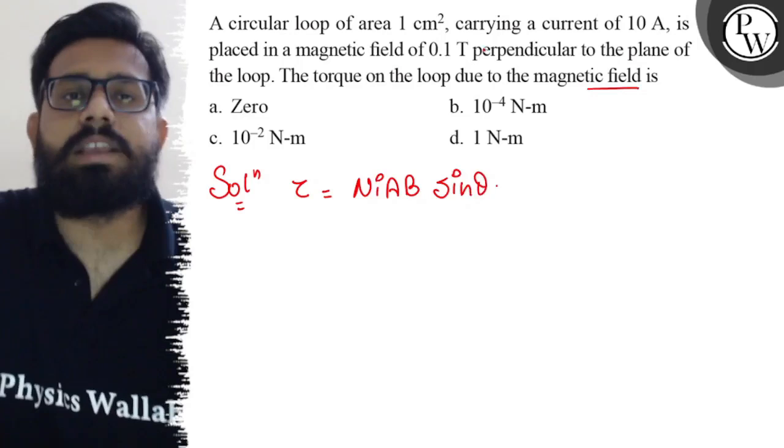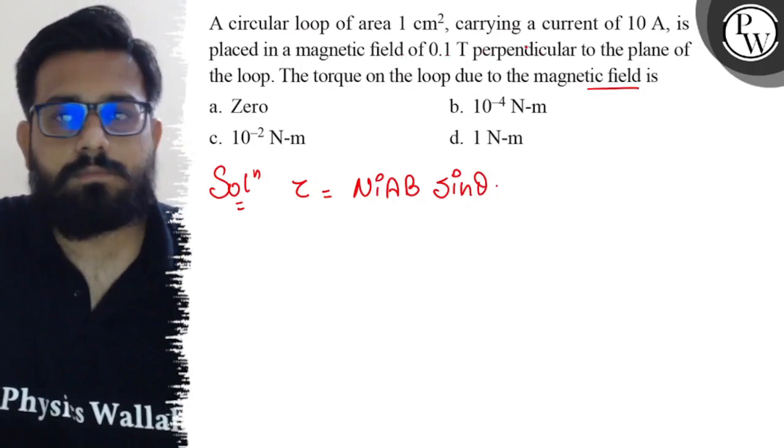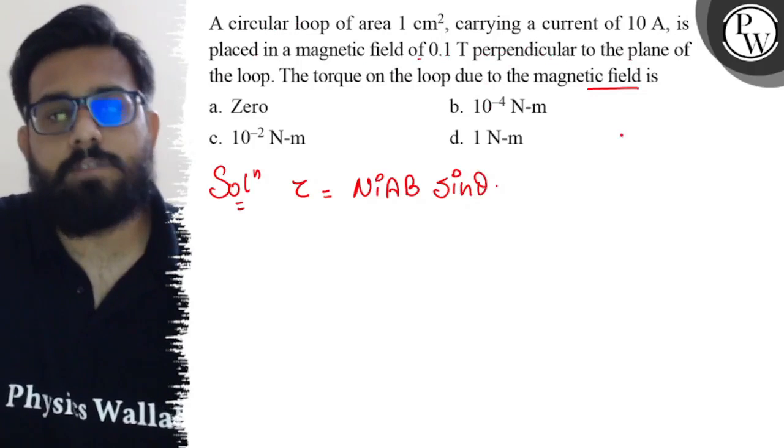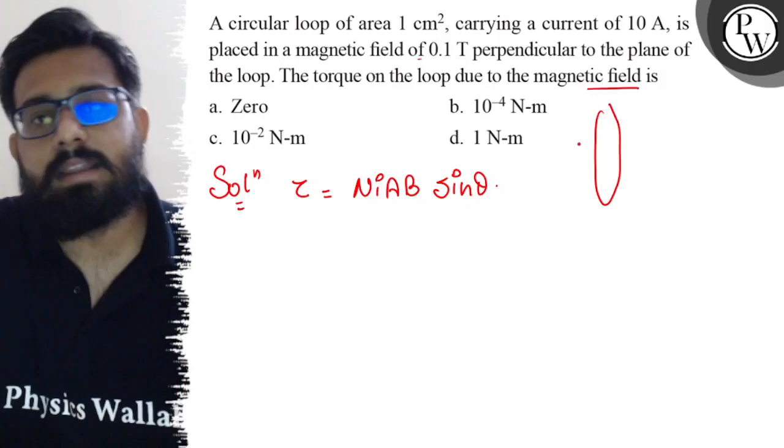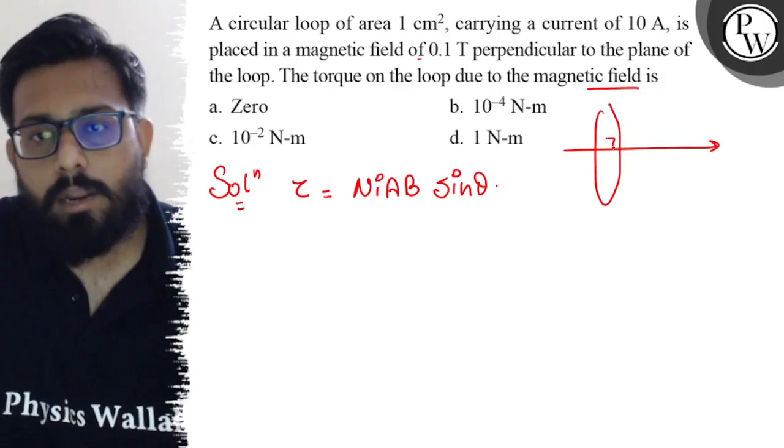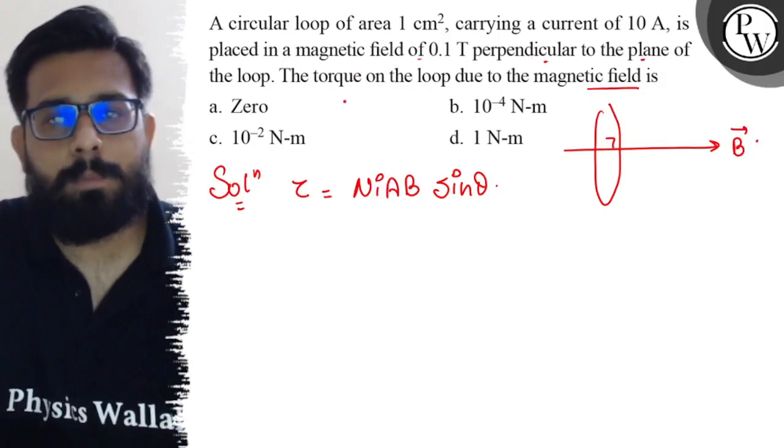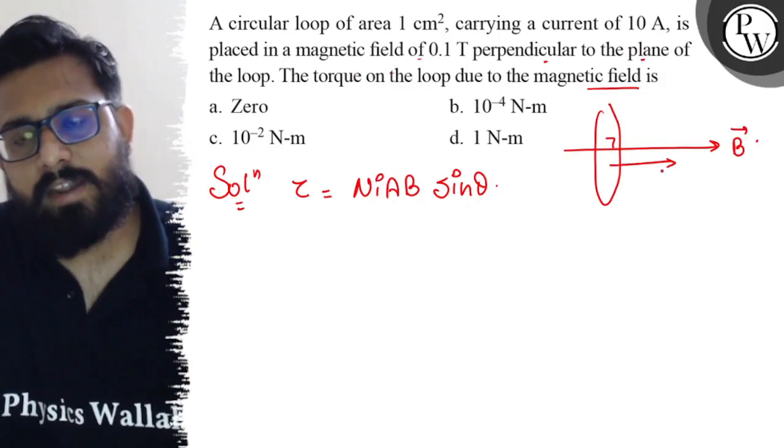Now what about the theta? See, the magnetic field—the circular loop is placed in a magnetic field perpendicular to the plane of the loop. So we have a loop and the magnetic field is perpendicular to this loop. The magnetic field is perpendicular to the plane of the loop.